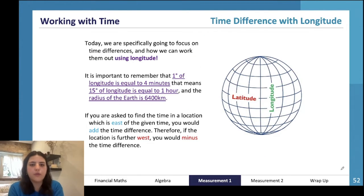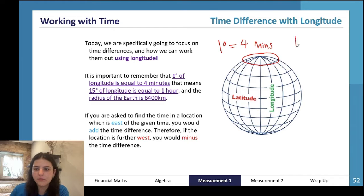We're going to work out how longitude more specifically helps us find time differences. There are 360 degrees on earth - it's a sphere. So one degree is equal to four minutes. That means 15 degrees times four is equal to one hour.